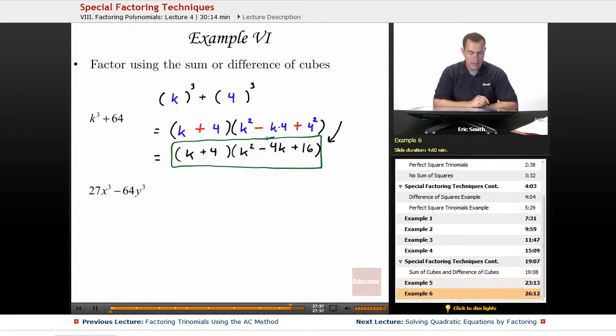All right, let's try one last one. This one is 27x cubed minus 64y cubed. So something cubed plus something cubed.